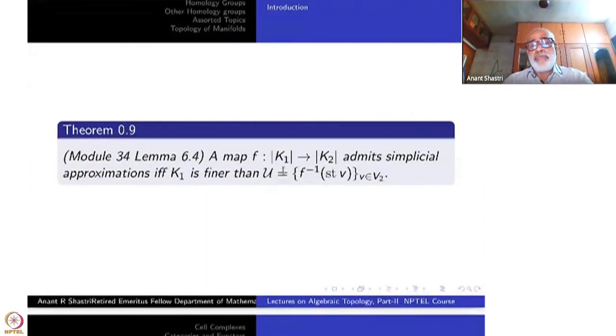A map f from |K₁| to |K₂| is a continuous function—map means continuous function, remember that—admits simplicial approximations if and only if the simplicial complex K₁ is finer than the open covering f* = {f⁻¹(star v)}, where v ranges over vertices of K₂. That is an open cover for K₂; f⁻¹ of that is an open cover of K₁, and K₁ is finer than that. That means star of u for any vertex u must be contained inside f⁻¹(star v) for some v. If that happens, then there will be a simplicial approximation to f.